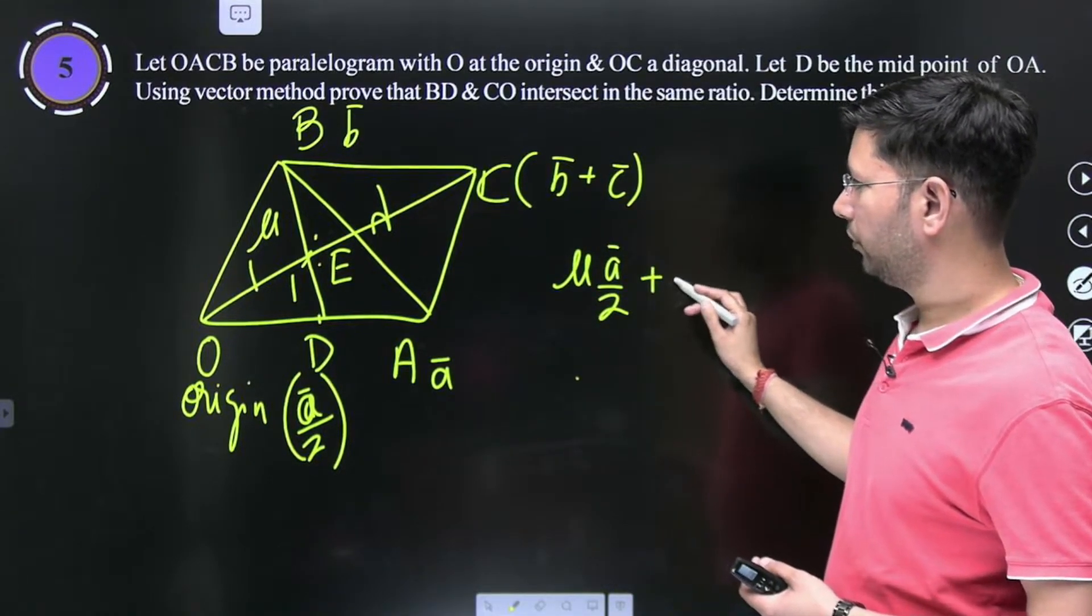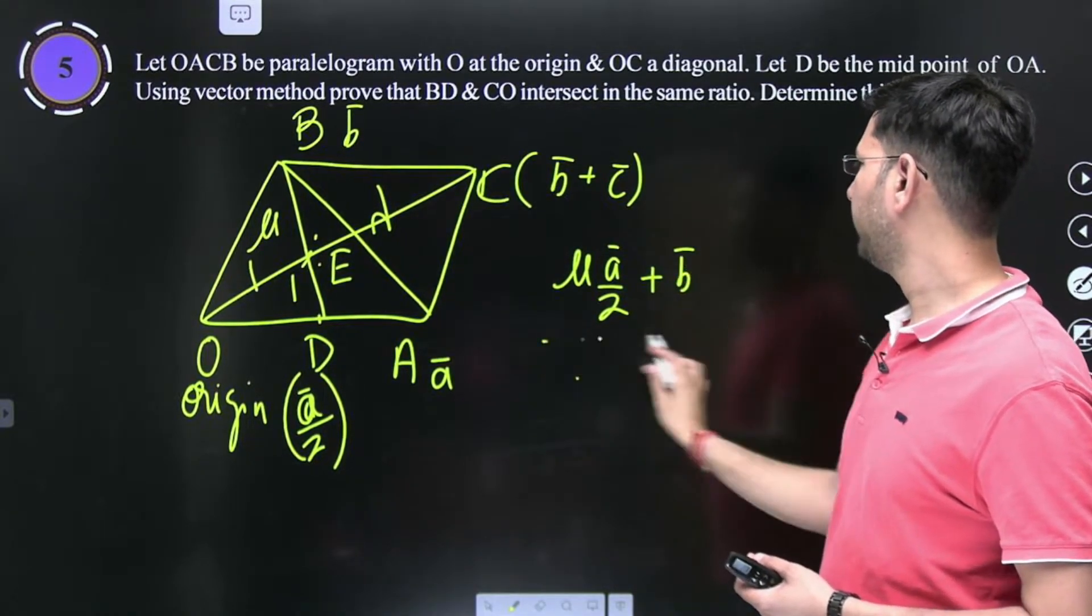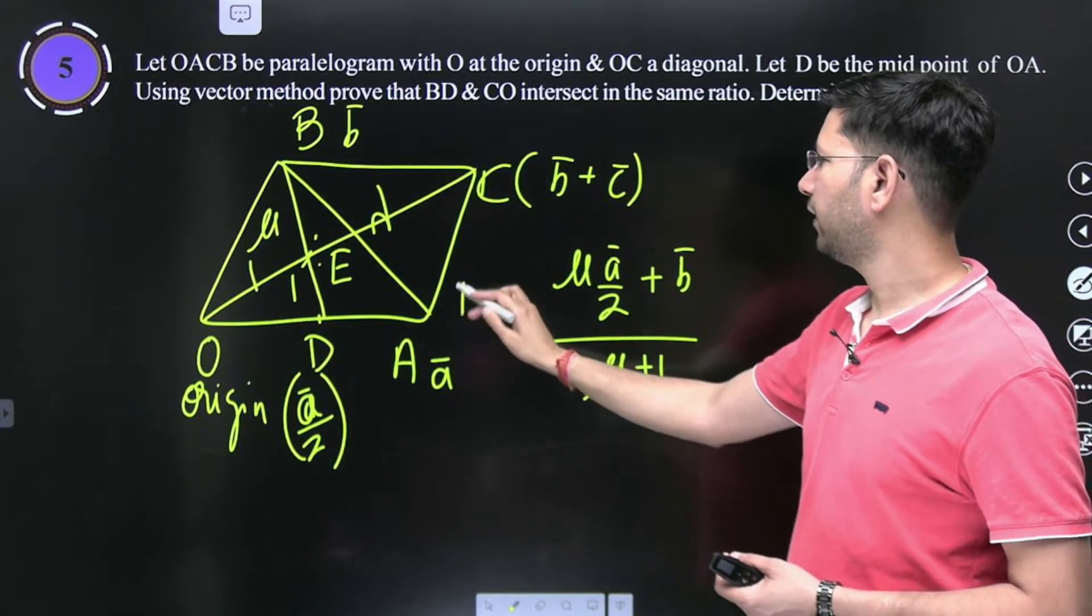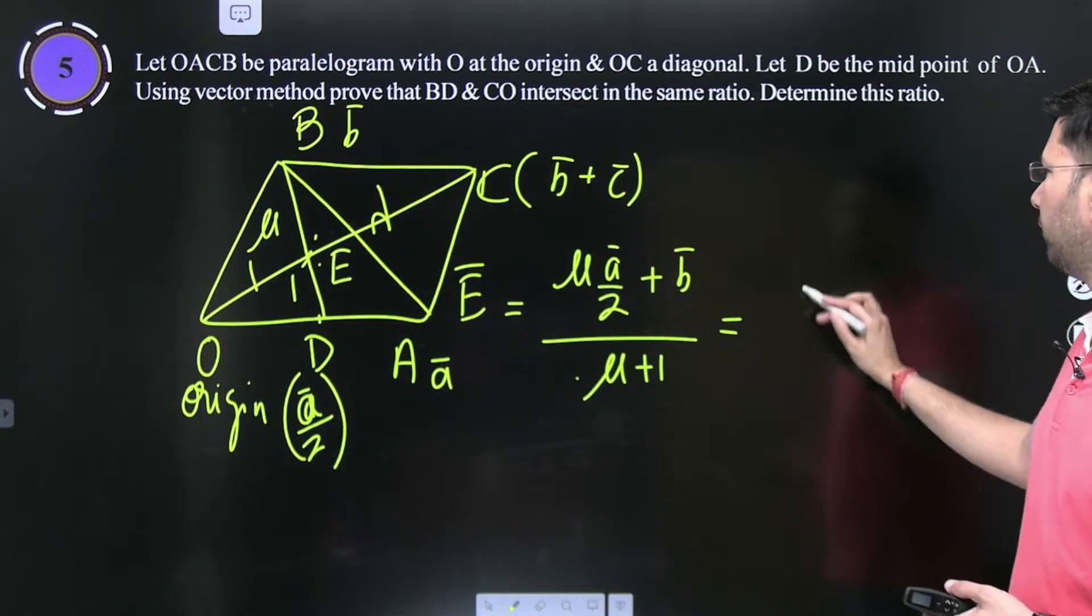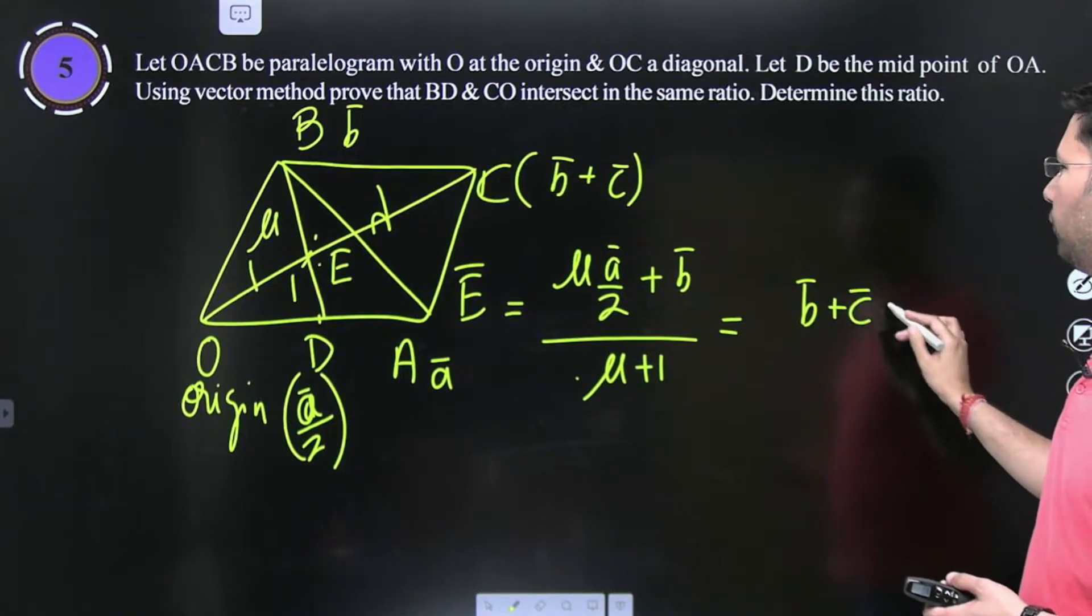And mu into B plus C divided by mu plus 1, this is the position vector of E. E which is the other way to write E.